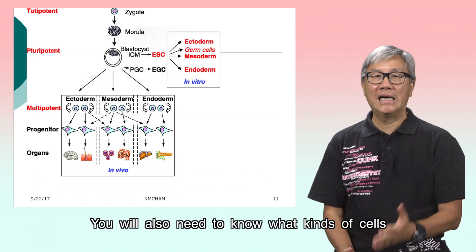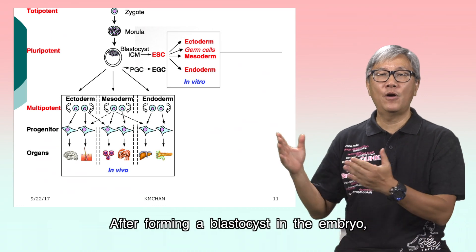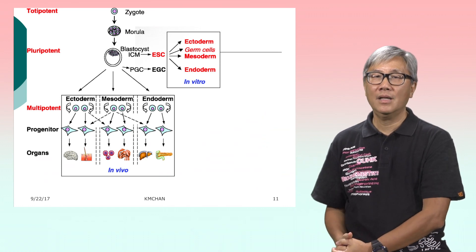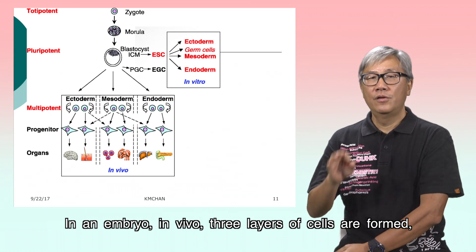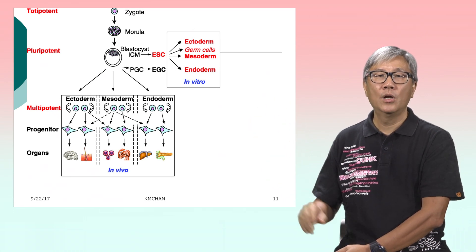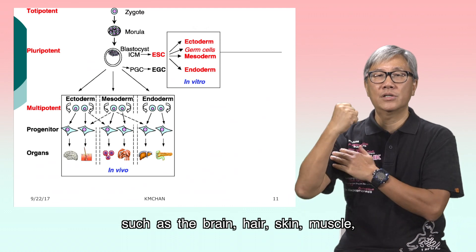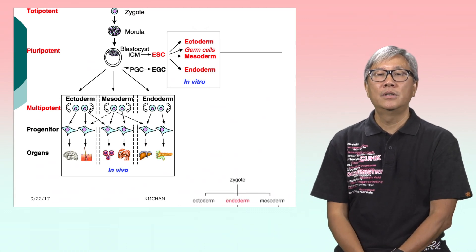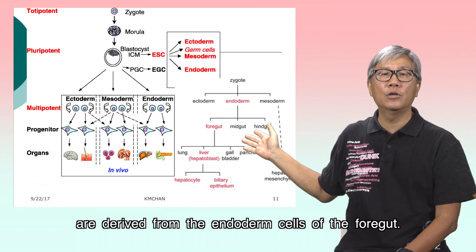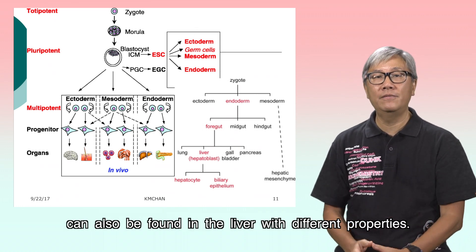You will also need to know what kinds of cells you are working on and their origins. After forming a blastocyst in the embryo, embryonic stem cells can be isolated for cell culture. In an embryo in vivo, three layers of cells are formed: namely the ectoderm, mesoderm, and endoderm, which grow into different cell types such as the brain, hair, skin, muscle, liver, and the gut. For example, the hepatoblasts and hepatocytes in the liver are derived from the endoderm cells of the foregut. Hepatic macrophages from the mesoderm can also be found in the liver with different properties.